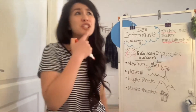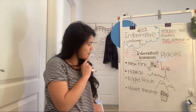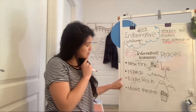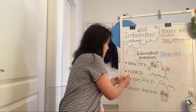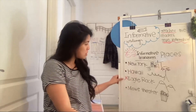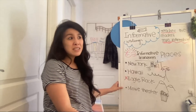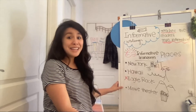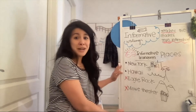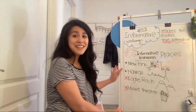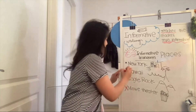So I'm going to think — what do I want to first start my very first informative place book about? Do I want to write it about Eagle Rock? I do know a lot about it, but it's not making me really excited, so maybe not Eagle Rock for now. Movie theaters — it's been a really long time since I've been to a movie theater because of the pandemic, and I kind of forgot what it's like. Between New York and Hawaii, I really want to go to Hawaii this summer, so I think it would be fun to write a book about it and do some more research before I actually go. So I think I'm going to choose Hawaii — that's going to be my topic.